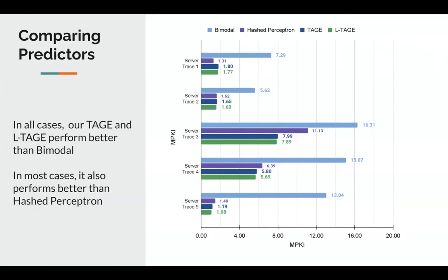A natural comparison is with bimodal because it is the baseline, and we also compared with hash perceptron because it is one of the strong predictors available in ChampSim. We see that in almost all server traces our TAGE and LTAGE performed much better than the baseline bimodal — in some cases the improvement is over 70 percent. In server traces 3, 4, and 9, TAGE and LTAGE even outperformed hash perceptron.